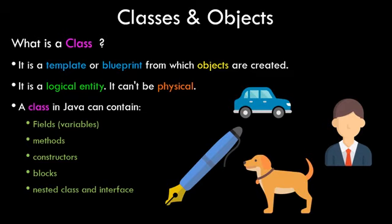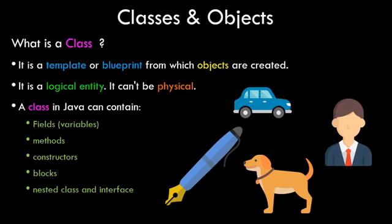So what exactly is a class? Theoretically, a class is a template or a blueprint from which objects are created. It is basically a logical entity and it cannot be physical — meaning it does not have any memory allocation when your program is running. The memory allocation is actually done to the object, not the class. A class contains fields like variables, methods, constructors, other blocks, and nested classes and interfaces.